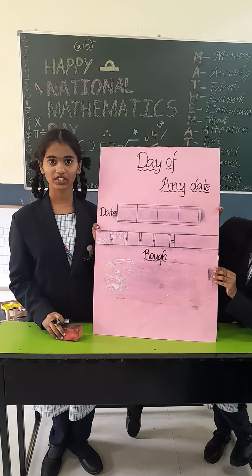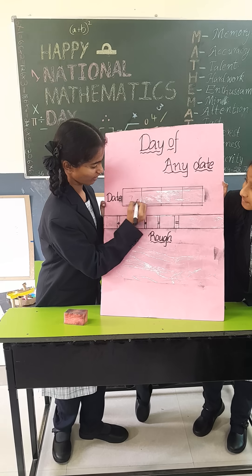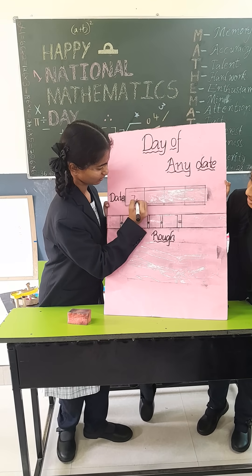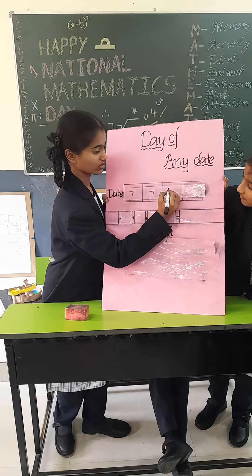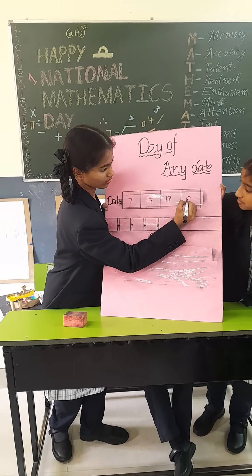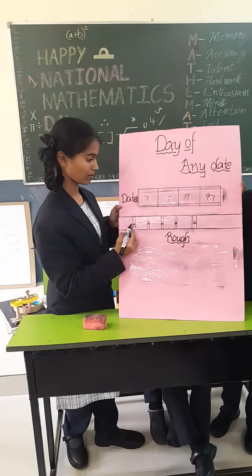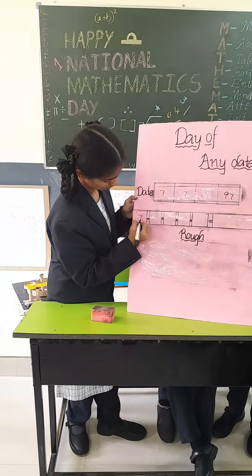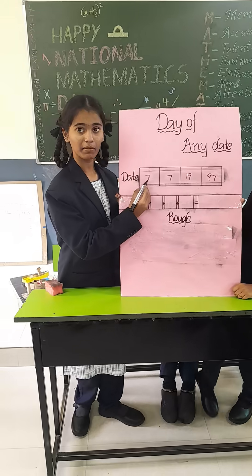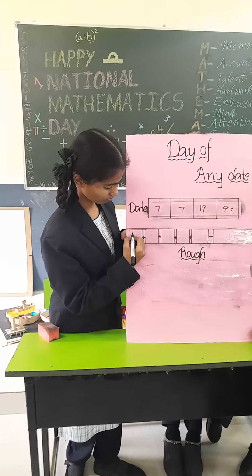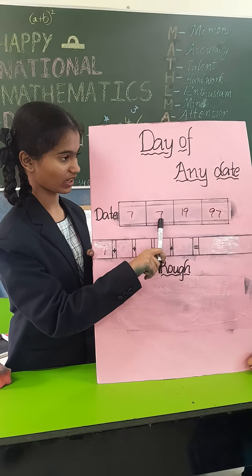Sir, can you give me a date? 7-7-1997. I am going to write the same date down here. I am writing the date — the day is 7 and 7 is the month.